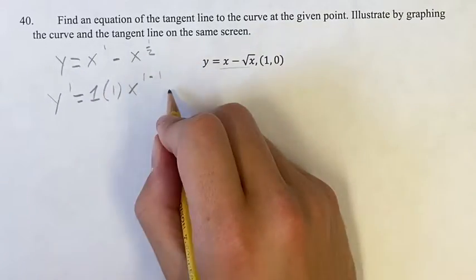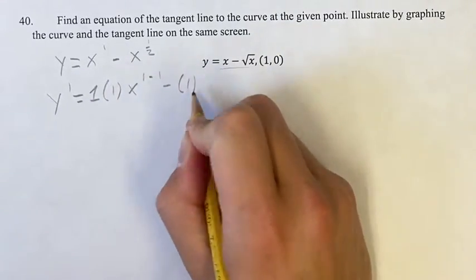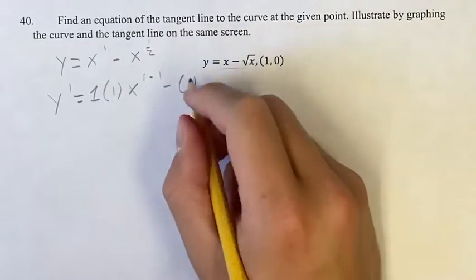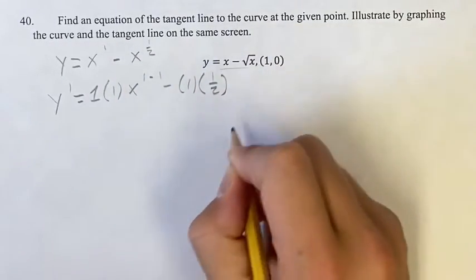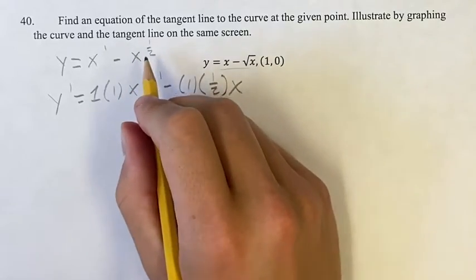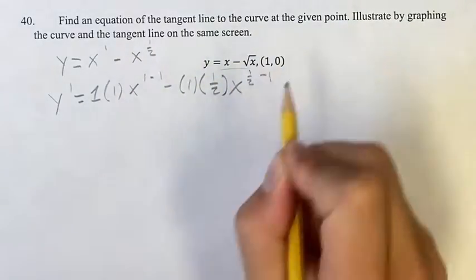In this case, the coefficient is negative 1. Either way, you bring down your exponent, so you bring down the 1 half. Your old exponent, or your new exponent rather, is the old one, 1 half minus 1.